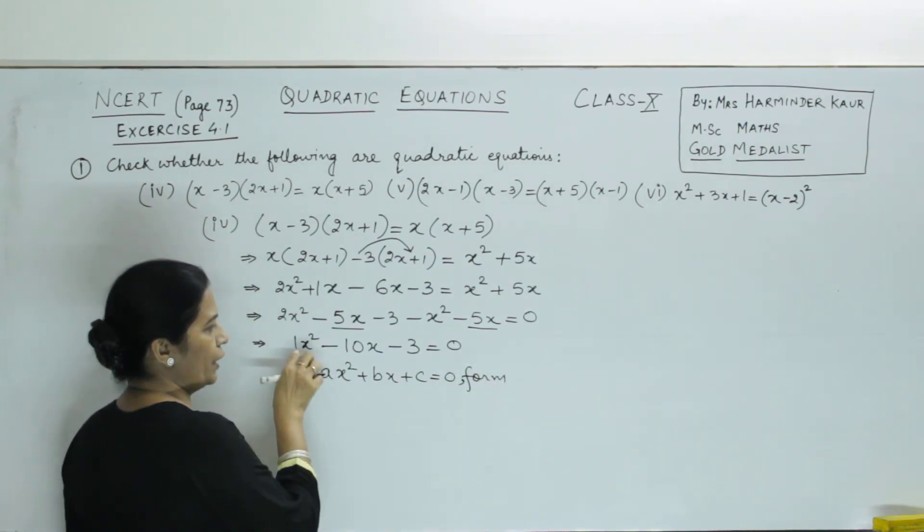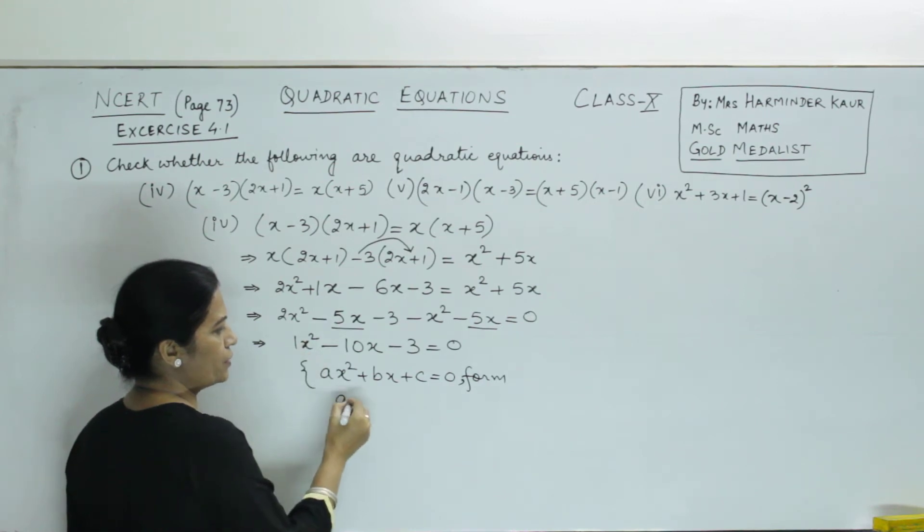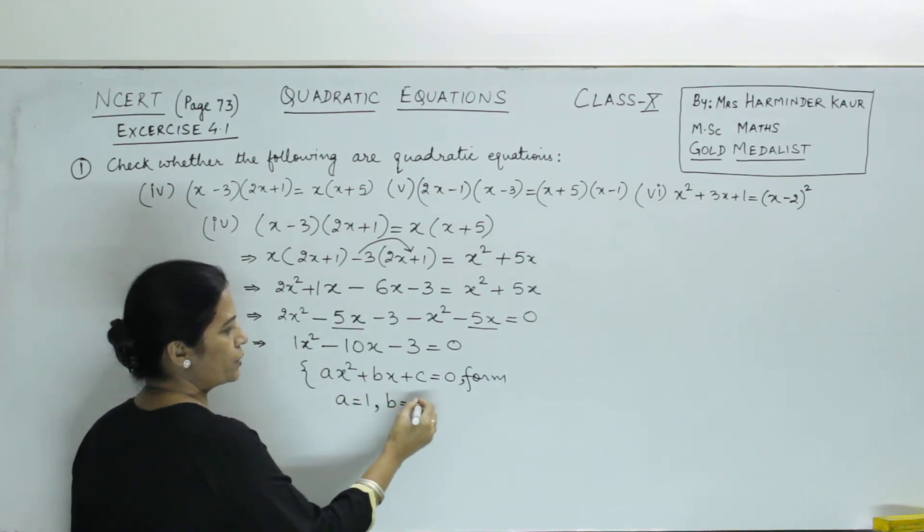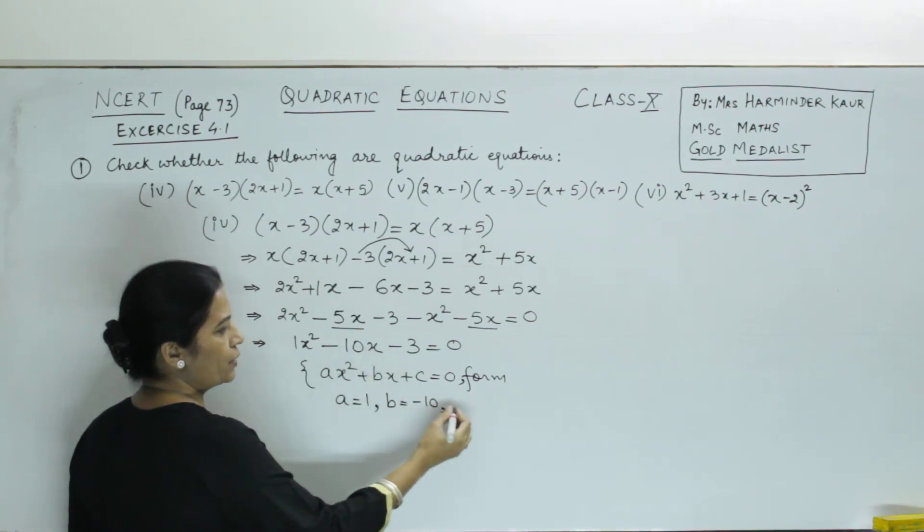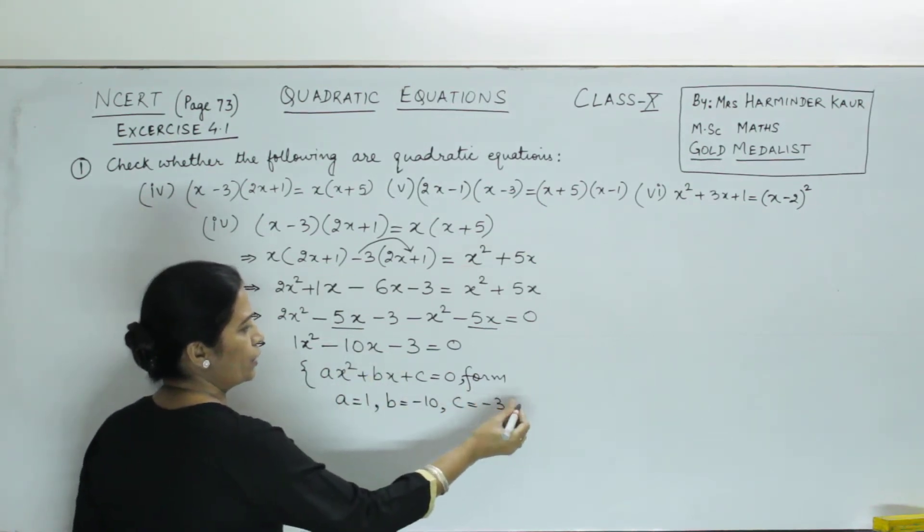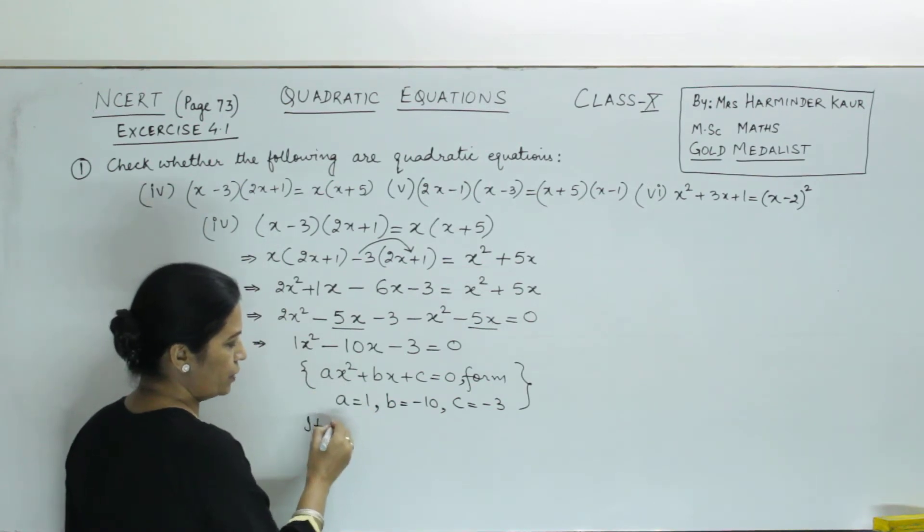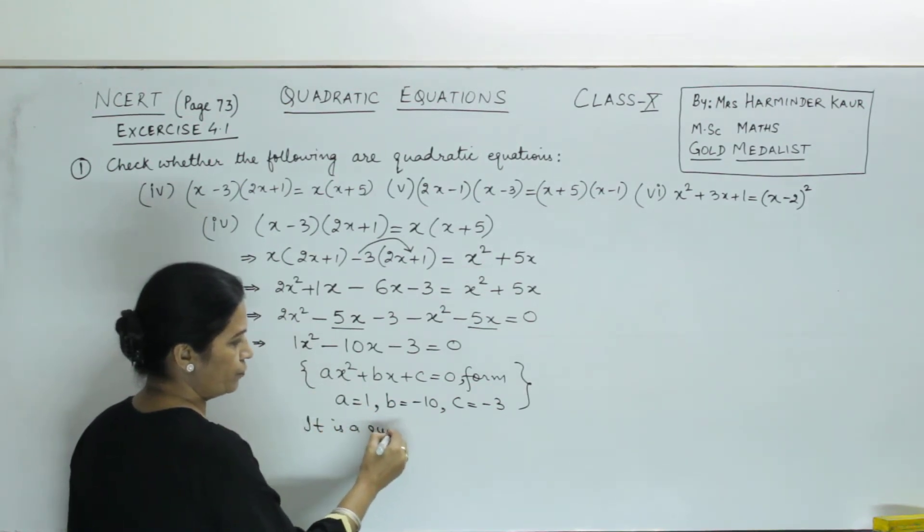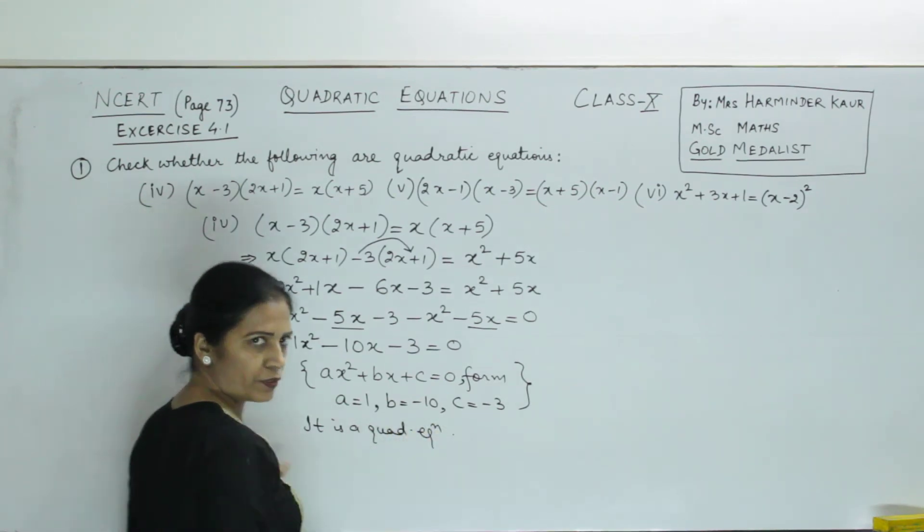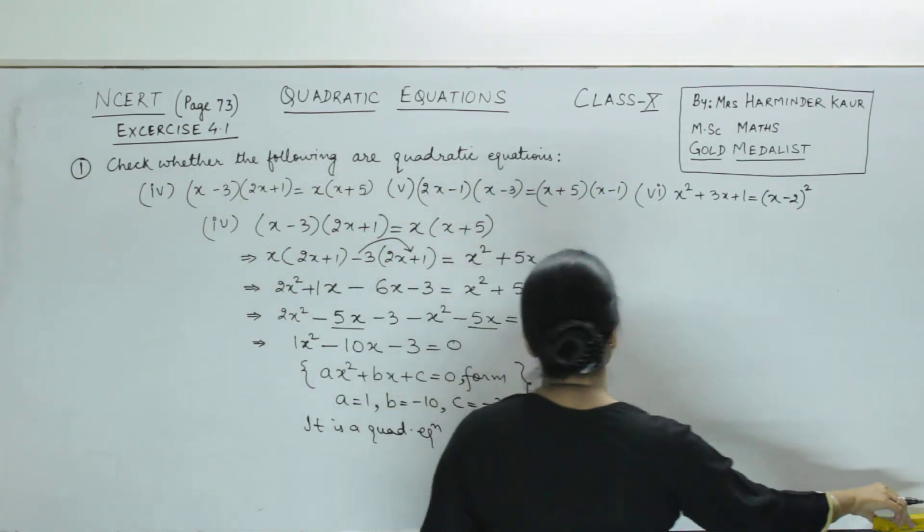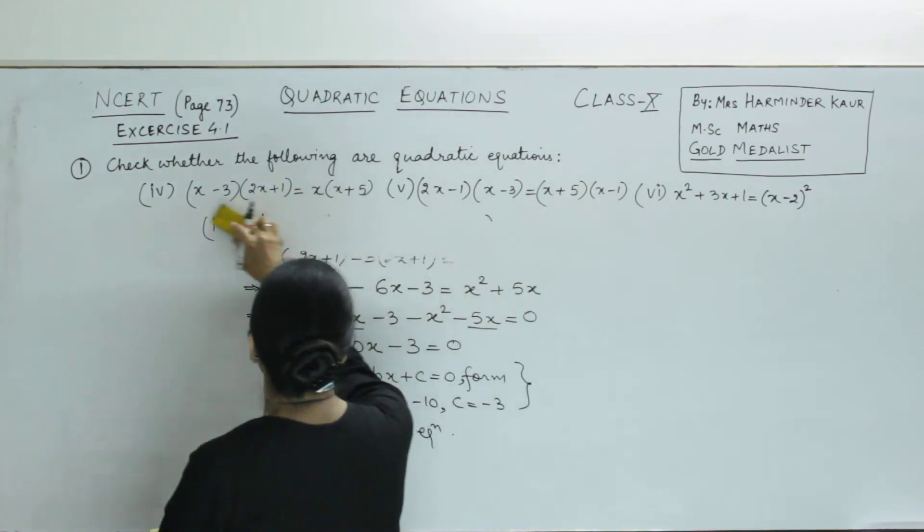So, you can see, it is of the form ax² + bx + c = 0. Here a is 1, b is minus 10, coefficient of x. c is minus 3. So, you can see, it is our quadratic equation.